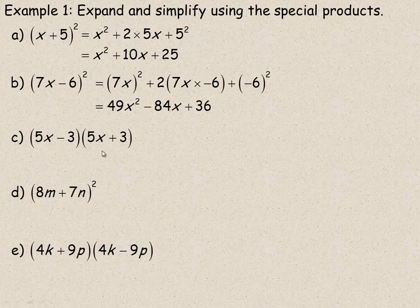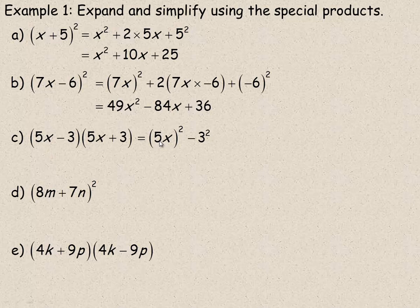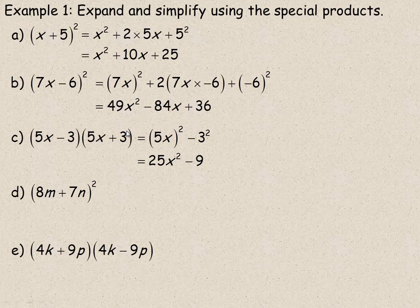Example c is the special product from the bottom part of the last page. The two binomials are the same except one has a minus and one has a plus, so this is the one where the middle terms add to zero. This equals 5x squared minus 3 squared, because it's 5x times 5x, and the negative 3 squared comes from multiplying negative 3 and positive 3. So that would be 25x squared minus 9. No middle terms, because the negative 15x and positive 15x add to zero.